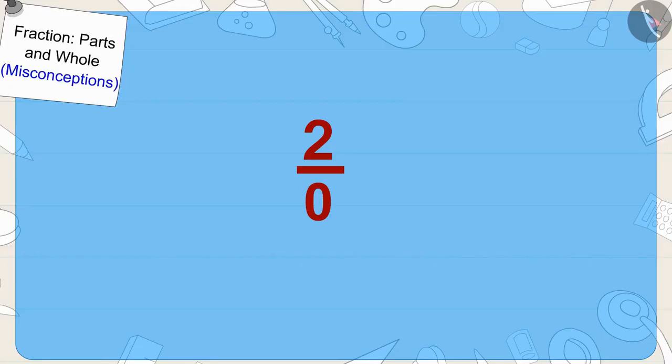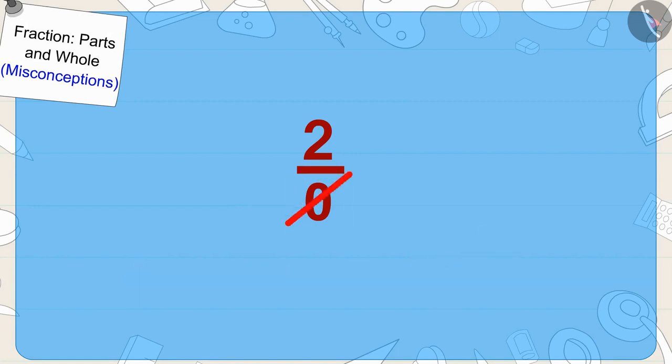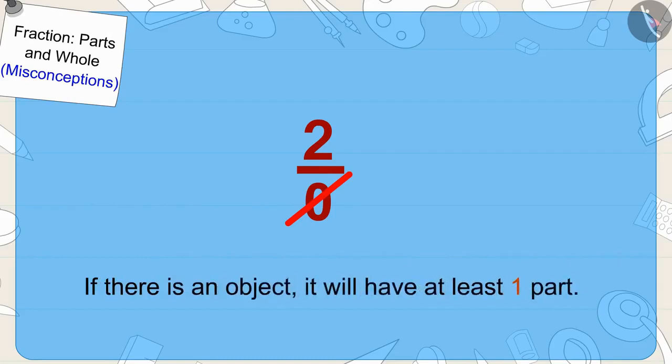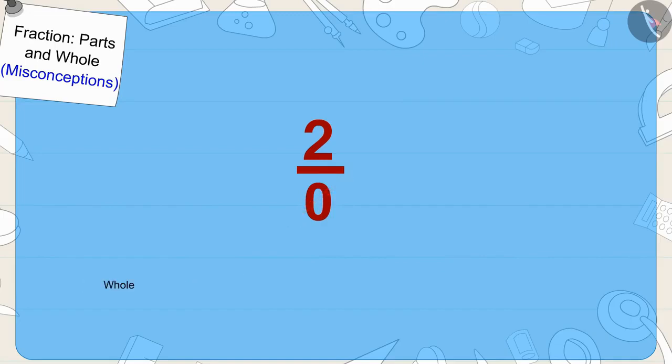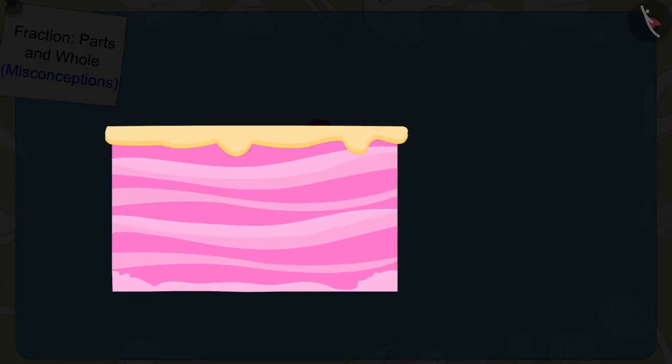Children, can we divide anything into zero parts? No. If there is an object, it will have at least one part.